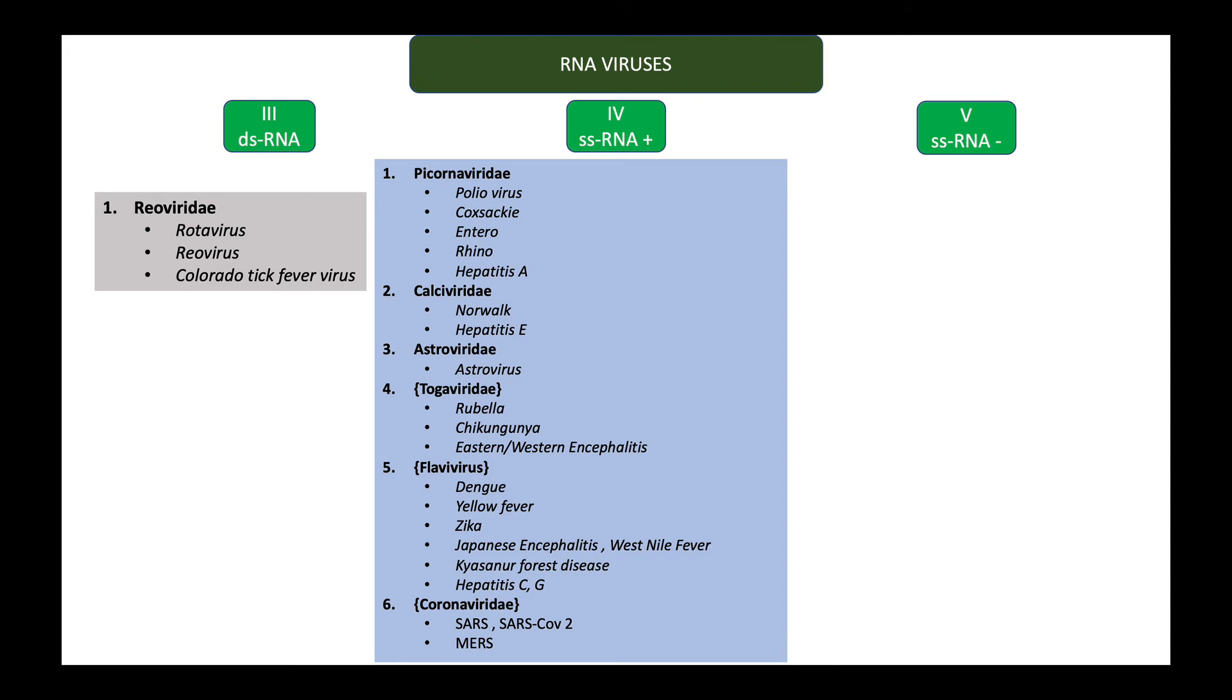Coming to class five, we first have the Arenaviridae family. Under this we have Lassa fever seen in West Africa, causes deafness, hemorrhagic manifestations, and encephalitis. We have South American hemorrhagic fever. The lymphocytic choriomeningitis virus causes aseptic meningitis and can also lead to meningoencephalitis.